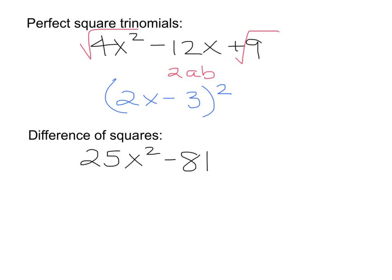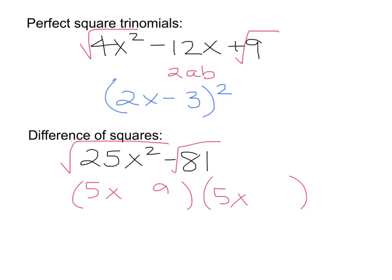Still reviewing — now we're going to talk about differences of squares, where you have 2 terms. Take the square root of 25x squared and that leaves you with 5x. Take the square root of 81 and you get 9. One of those parentheses gets a plus sign, the other one gets a minus sign.